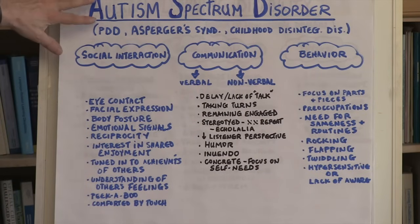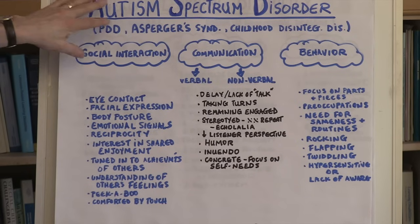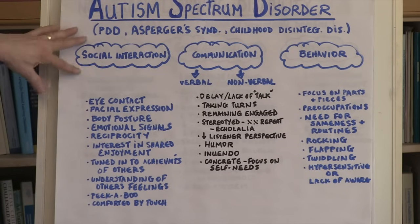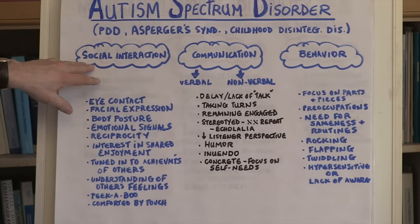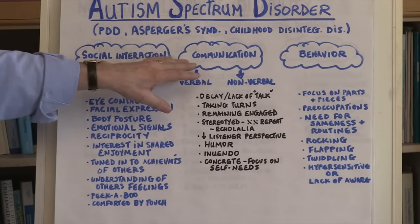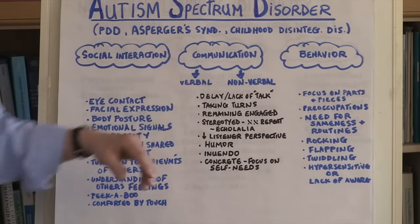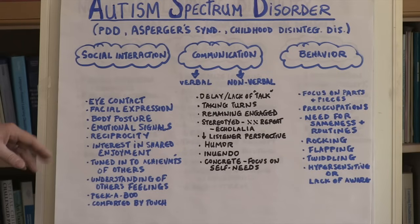So what are some of the characteristic features, predominant features of autism? Well, individuals who fall within this autism spectrum disorder have difficulties in social interaction, they have difficulties in communication, and they have difficulties in the area of behavior. So let's look at each of those individually.